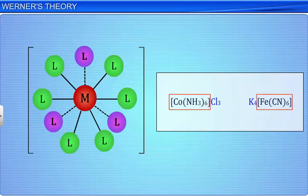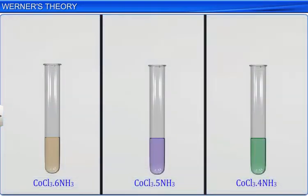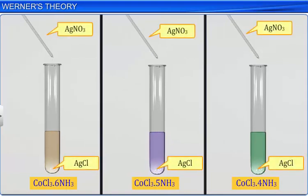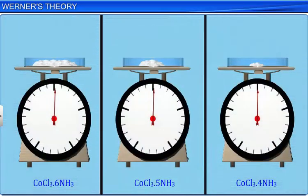The postulates of Werner's coordination theory were actually based on experimental evidence rather than theoretical. Werner treated cold solutions of a series of compounds of cobalt 3 chloride with ammonia with an excess of silver nitrate and weighed the silver chloride precipitated.